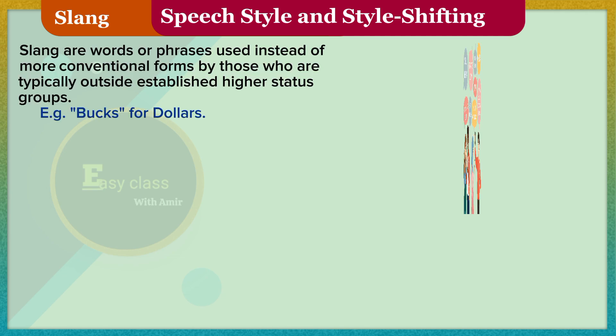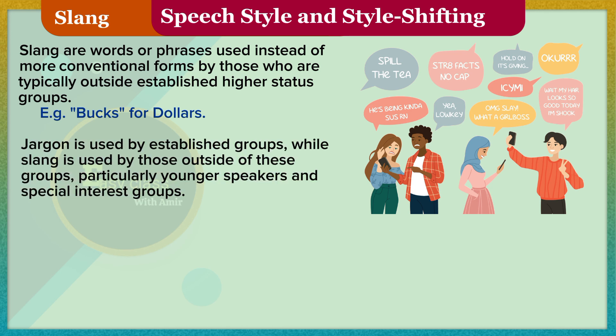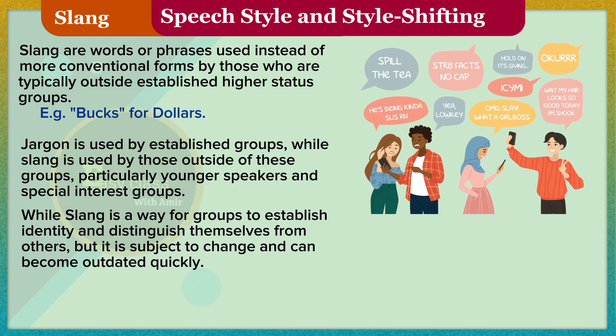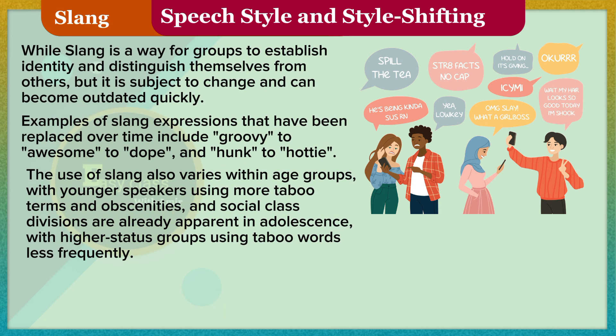Slang refers to words or phrases used instead of more conventional forms by those who are typically outside established higher-status groups — for example, 'bucks' for dollars. Jargon is used by established groups, while slang is used by those outside these groups, particularly younger speakers and special interest groups. While slang is a way for groups to establish identity and distinguish themselves from others, it is subject to change and can become outdated quickly. Examples of slang expressions that have been replaced over time include 'groovy' to 'awesome' to 'dope,' and 'hunk' to 'hottie.' The use of slang also varies within age groups, with younger speakers using more taboo terms and obscenities, and social class divisions are already apparent in adolescence, with higher-status groups using taboo words less frequently.